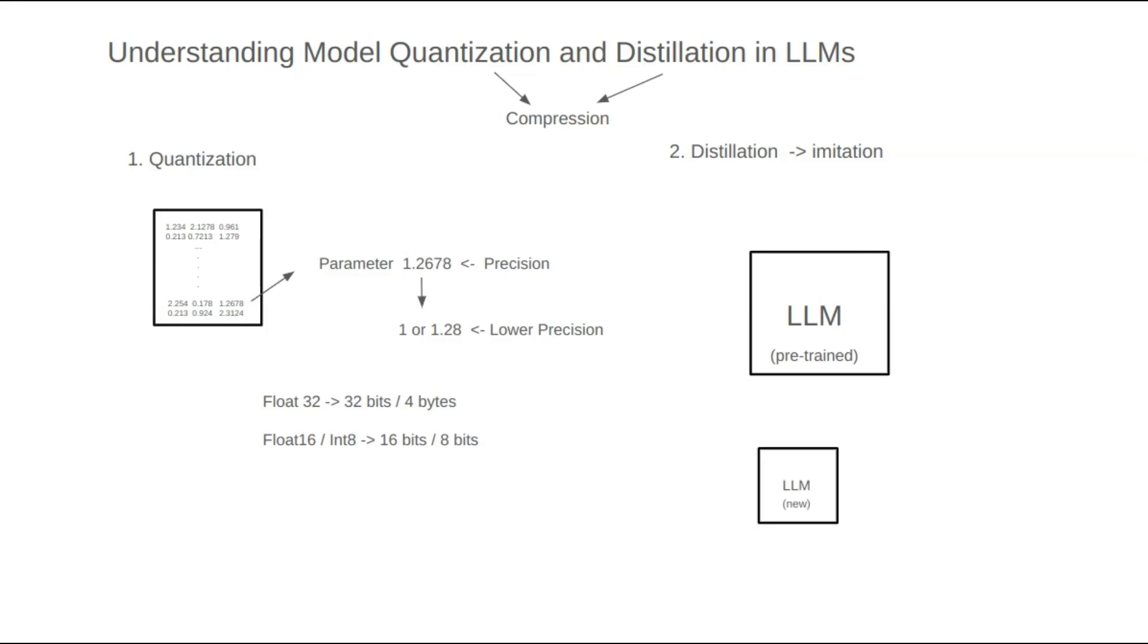In this method, we construct a smaller model and train it to mimic the behavior of the larger model. The idea is similar to a child imitating an adult. Whatever the large language model does, we want a small model to do as well.